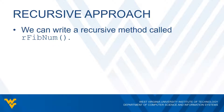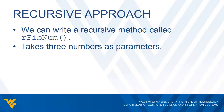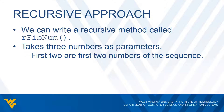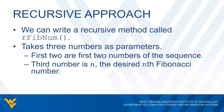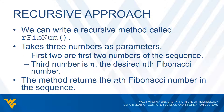We can write a recursive method for this, which we'll call RFibNum, and this will determine the desired Fibonacci number. This will do the exact same thing as what we just did in our previous code. This method is going to take three numbers as parameters. The first two numbers represent the first two numbers of the Fibonacci sequence — A1 and A2 — and our third number is N, which is the desired Nth Fibonacci number. The method will return the Nth Fibonacci number in the sequence.